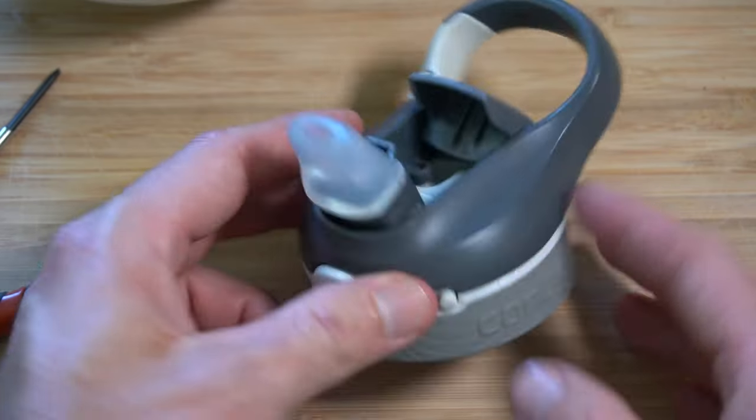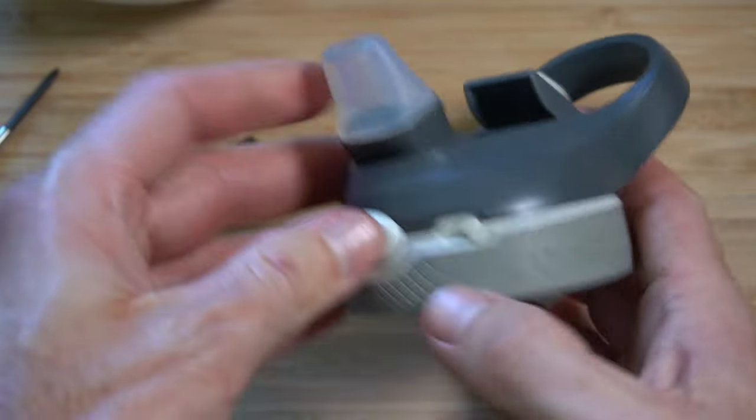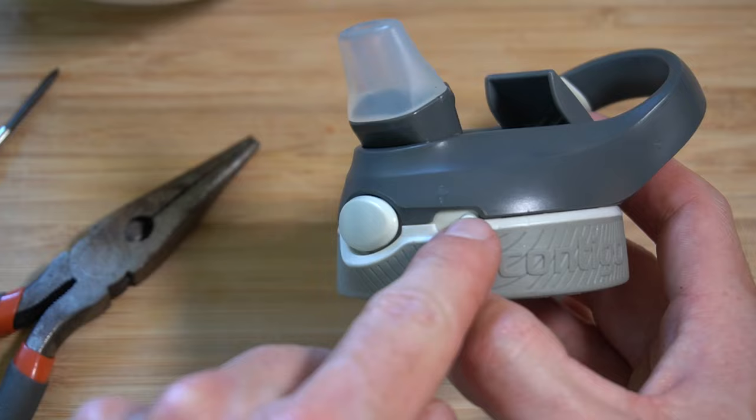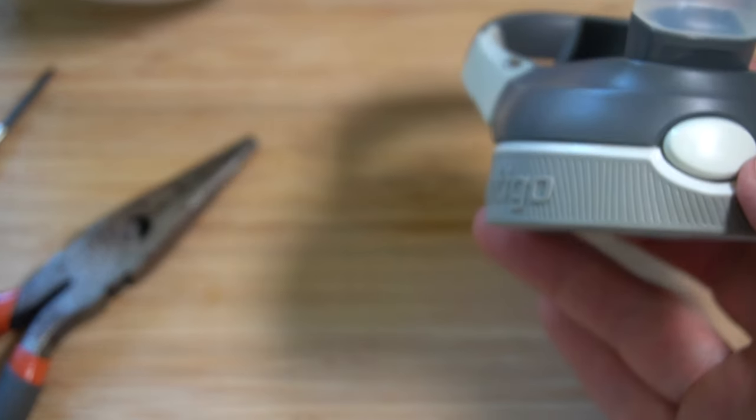Once we have those screws undone, we want to go ahead and separate the top part from the bottom part. However, it won't just come off. There's actually two tabs here just to the right of the locking mechanism and the same two tabs over this side.